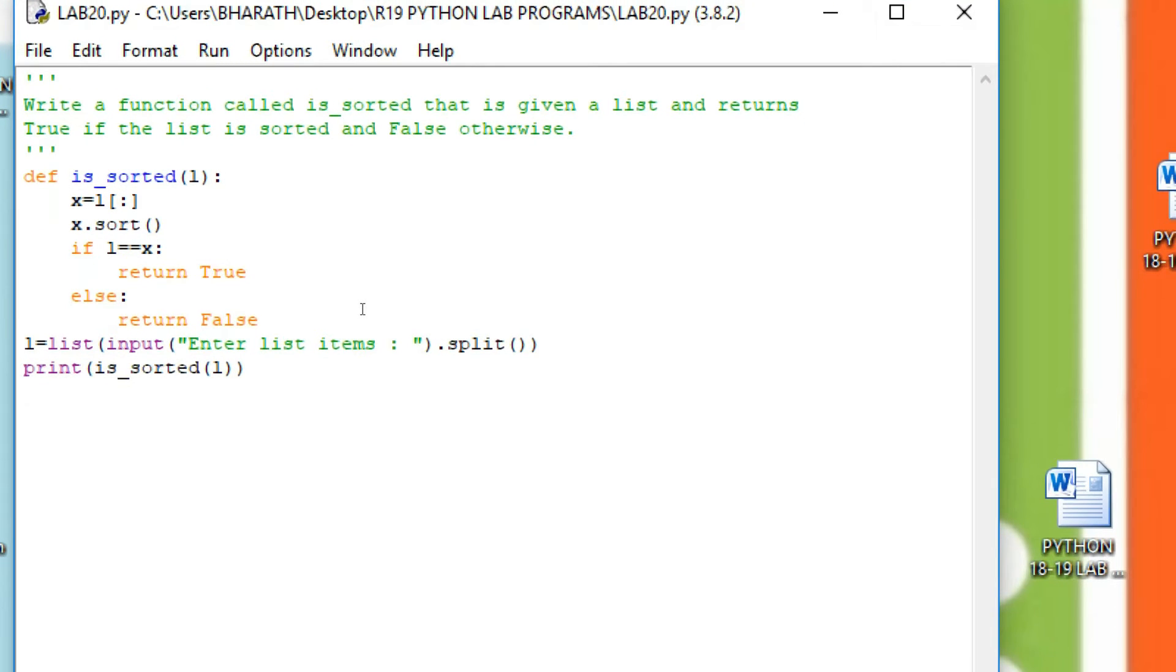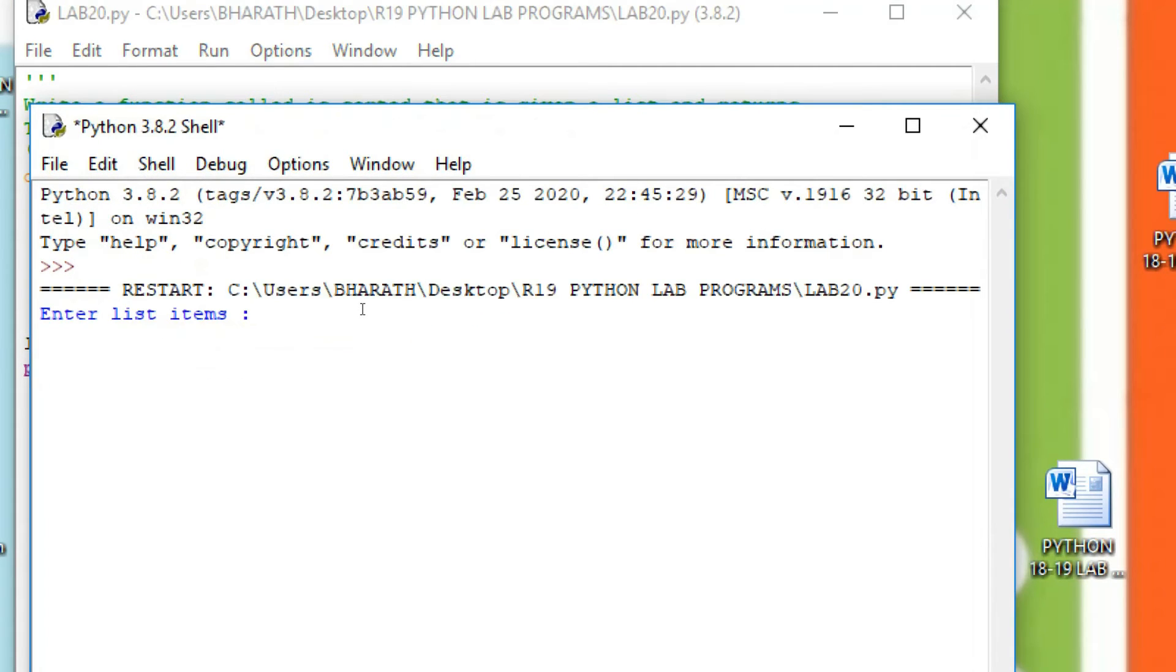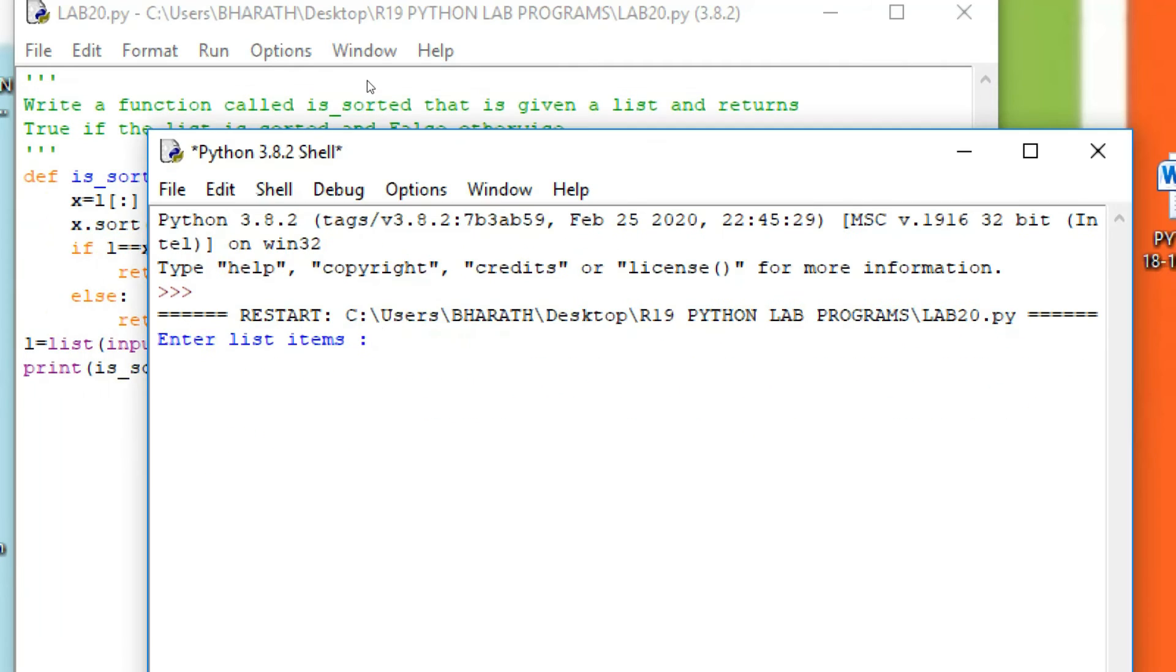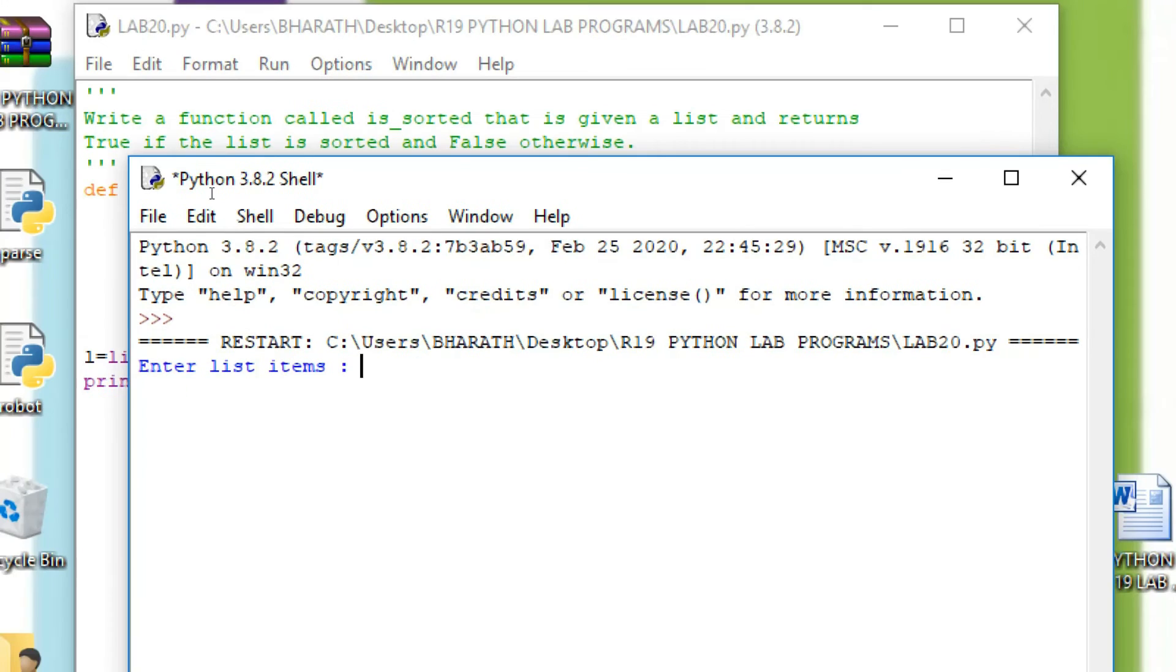Now we see the execution of the program. Enter list item. For example, I entered 12, 34, 56, 78, 90. All are in sorted order, so it returns True. Now I entered 12, 34, 56, 23, 89. Now the 23 is in not sorted order. Now you can see it returns False.